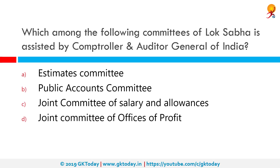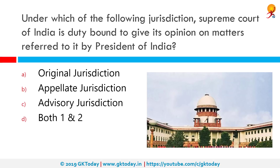Which among the following committees of Lok Sabha is assisted by the Comptroller and Auditor General of India (CAG)? The correct answer is the Public Accounts Committee. It is the committee of selected members of Parliament constituted by the Parliament of India for the purpose of auditing the revenue and expenditure of the Government of India. It serves as a check on the government especially with respect to its expenditure, and its primary function is to examine the audit report of CAG after it is laid in Parliament.